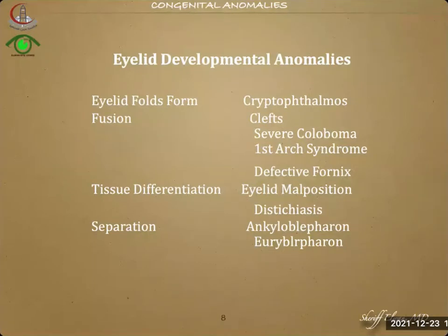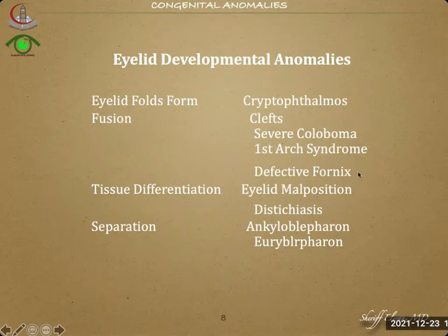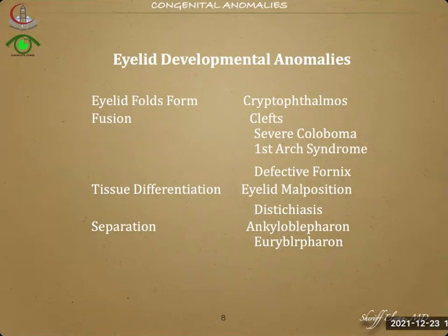Regarding developmental anomalies: if the eye folds don't form, we have cryptophthalmos. Abnormalities in fusion lead to clefts, severe coloboma, first arch syndrome, and defective fornices. Tissue differentiation abnormalities lead to eyelid malpositions and distichiasis, because the tissues in the eyelid differentiate into different layers and the lashes. Abnormalities in separation lead to ankyloblepharon and euryblepharon.